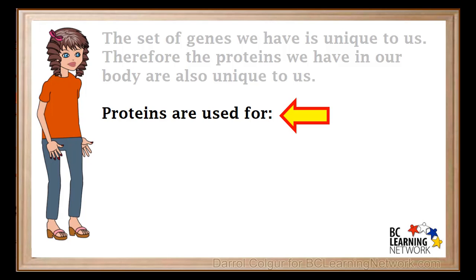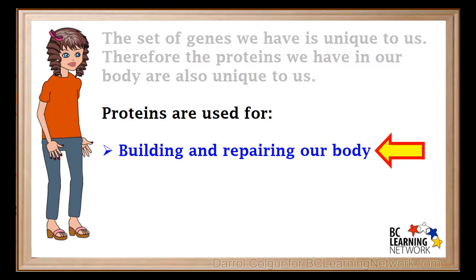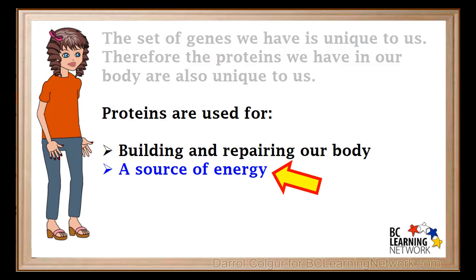Proteins are very important to us. Some of their major functions in the body are building and repairing our body. For example, hair, eyes, skin, and muscles are all made of protein. Our bodies can also use protein as a source of energy. Remember, carbohydrates and fats are also important sources of energy.